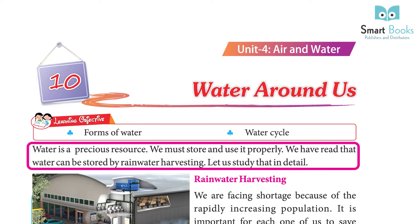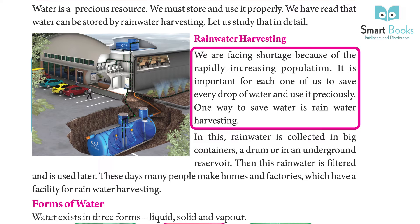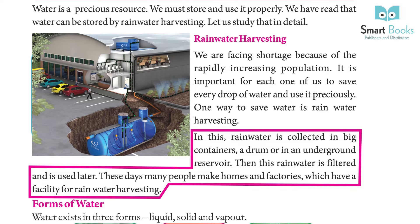Let us study rainwater harvesting in detail. We are facing water shortage because of the rapidly increasing population. It is important for each one of us to save every drop of water and use it precisely. One way to save water is rainwater harvesting, where rainwater is collected in big containers, a drum, or in an underground reservoir.